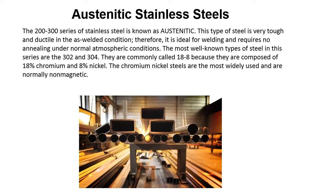The 200-300 series of stainless steels is known as austenitic. This is the type of steel that is very tough and ductile in the as-welded condition, therefore it is ideal for welding and requires no annealing under normal atmospheric conditions. The most well-known types are 302 and 304, commonly called 18-8 because they are composed of 18% chromium and 8% nickel. The chromium-nickel steels are most widely used and are normally non-magnetic. Kitchen sinks and similar items are pretty much austenitic stainless steel.